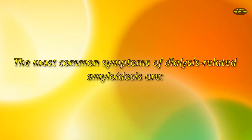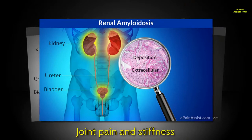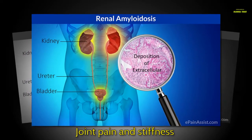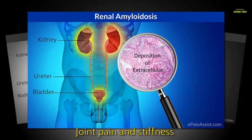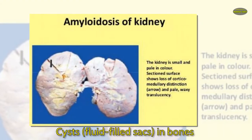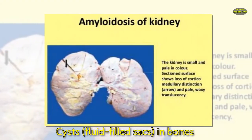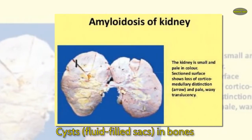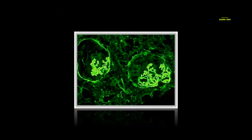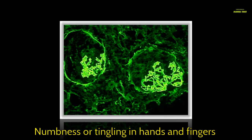The most common symptoms of dialysis-related amyloidosis are joint pain and stiffness, cysts (fluid-filled sacs) in bones, and numbness or tingling in hands and fingers.